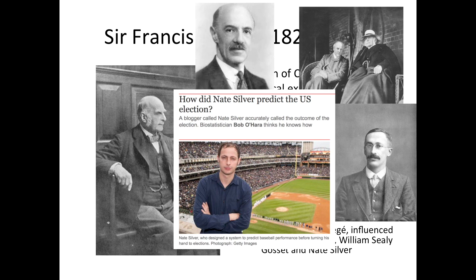What about Nate Silver, from FiveThirtyEight? He correctly predicted multiple U.S. elections. In 2012, he predicted almost every single race. The reason he was so accurate is he didn't give any polls himself. He just aggregated all the polls that were out there — some were bad, some were really good — found the middle of all those polls and was able to predict the entire election. We do this in science too, and we're going to talk about how we can do that today.